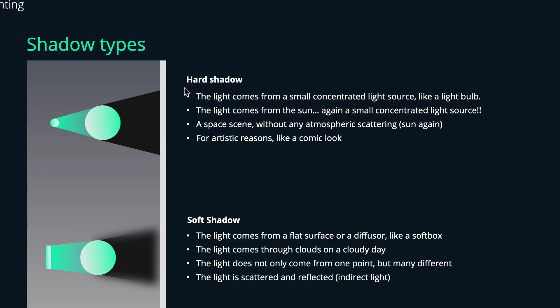Here's a quick sum up. Hard shadows exist when the light comes from a small concentrated light source like a light bulb or even the sun. The sun is nothing else as a very small but very bright light source. If you have a space scene there will be no atmospheric scattering whatsoever, so it's again like the sunlight but with even more pronounced hard shadows because the light will not be scattered by the atmosphere at all. You can for artistic reasons choose to do hard shadows to get a more stylized comic look for example.